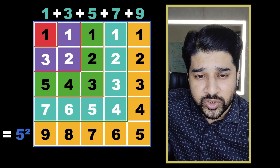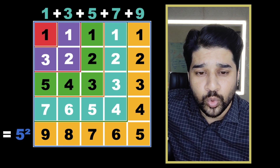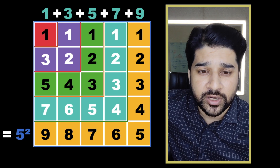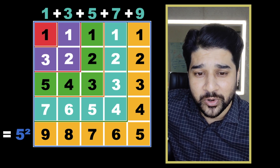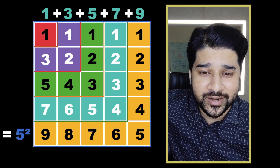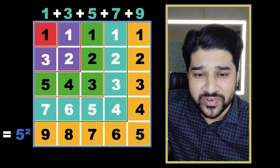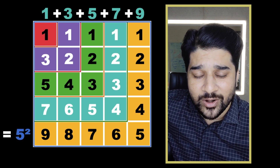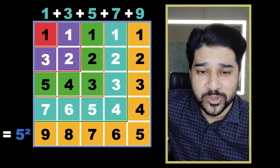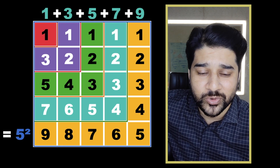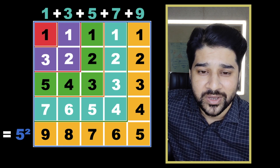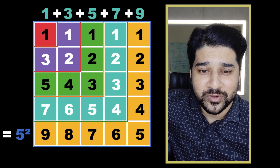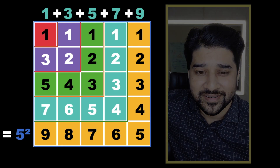So if someone asks you what is the sum of the first 100 odd numbers, you're going to call it 100 squared. And if someone asks you what's the sum of the first n odd numbers, you're going to call it n squared. See you in the next video with more such amazing patterns.